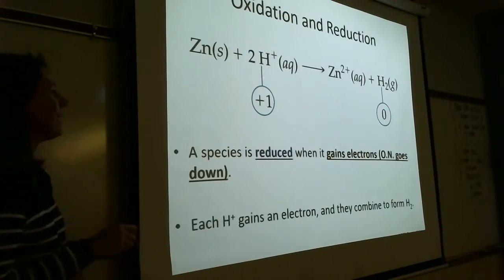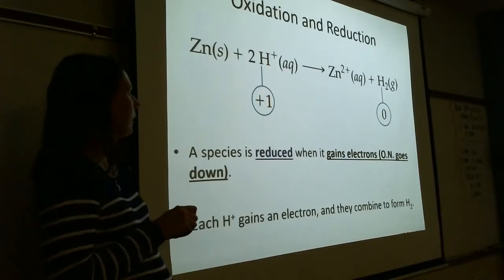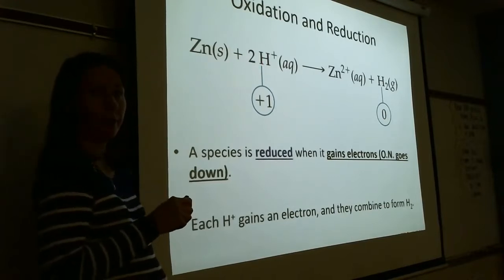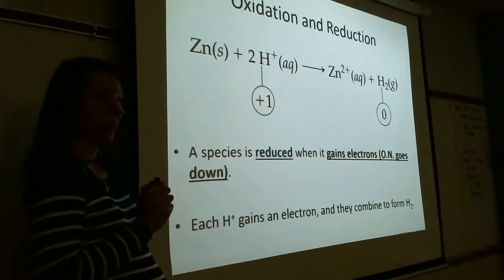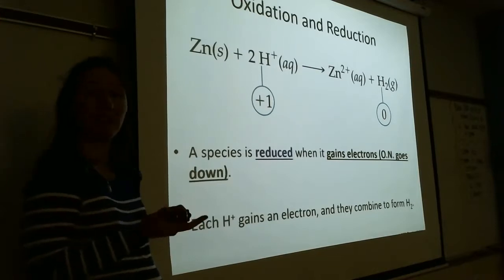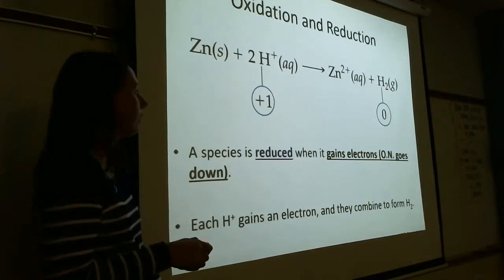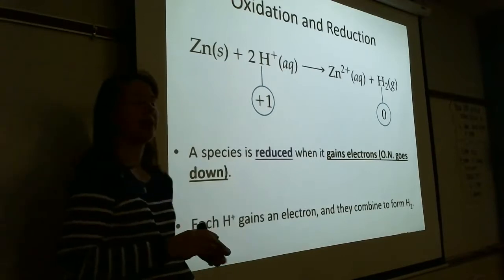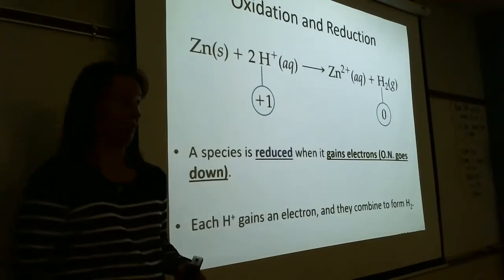This is similar to a lab experiment. A metal gives electrons to a cation, the cation becomes a metal, and the metal becomes a cation — that's oxidation and reduction. Let's work through a reaction together. First, assign oxidation numbers to every substance, then ignore spectators (substances whose oxidation number doesn't change).